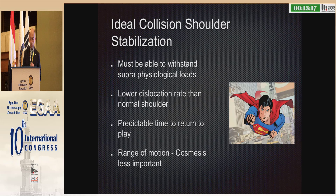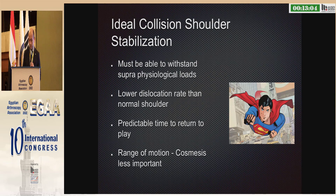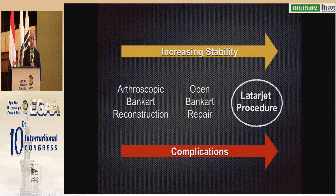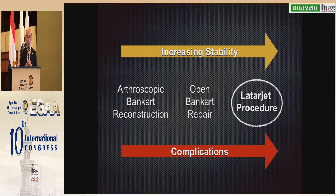What is the ideal collision shoulder stabilization? It must be able to withstand supraphysiological loads, have a lower dislocation rate than a normal shoulder, a predictable time to return to play, and range of motion is more important than cosmesis. If we increase the stability, maybe we increase the complications. We have arthroscopic Bankart reconstruction on one side, open Bankart repair in the middle, and the LATARJET procedure on the other end of the spectrum.